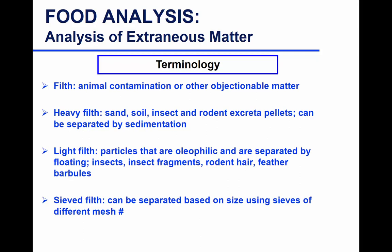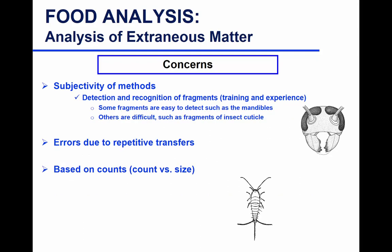'Seed filth' is separated by size using different mesh numbers. A known concern is counts versus size — a whole insect or a leg of an insect is counted as one, which is a recognized problem. Another concern is subjectivity — determining whether a fragment is from an insect requires expertise. You might have an insect cuticle, part of the exoskeleton, that you may not be able to definitively identify.